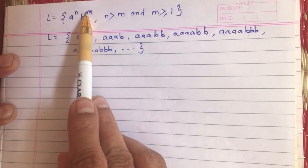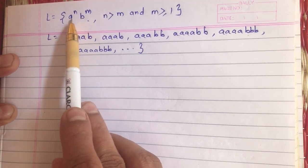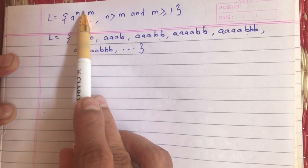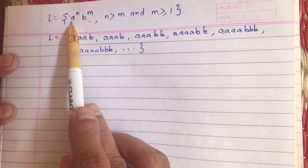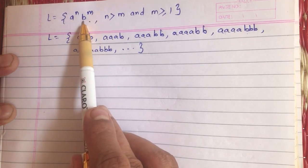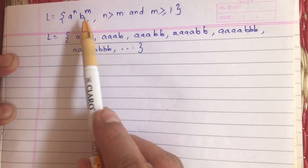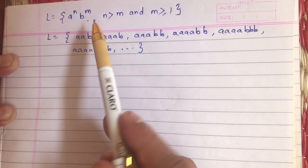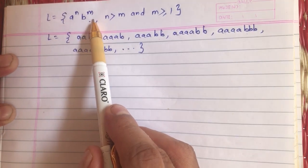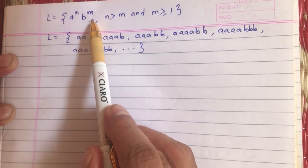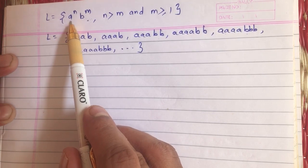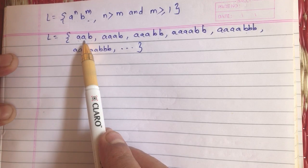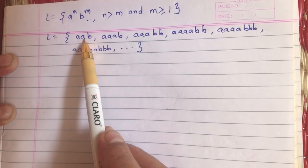Since the count of a's must exceed the count of b's, we need to count them. Our strategy will be to push all a's onto the stack until we encounter a b. The moment we encounter a b, for every b we will pop the equivalent a from the stack. After some time, the string will finish but there will still be some a's remaining on the stack.